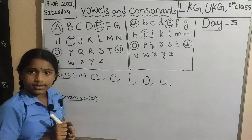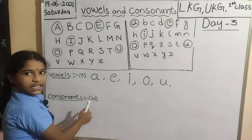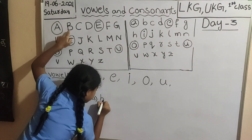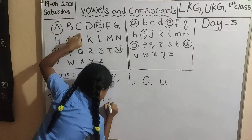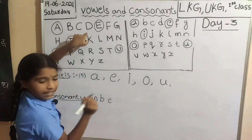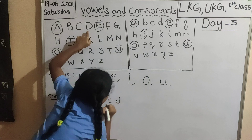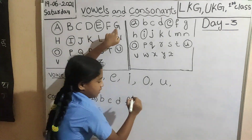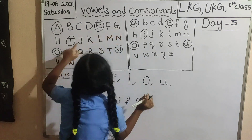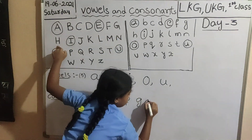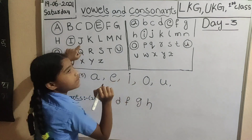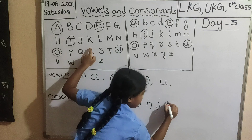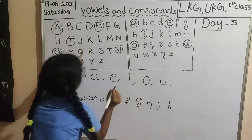Now consonants are twenty-one. B, C, D, F, G, H, J, K, L.